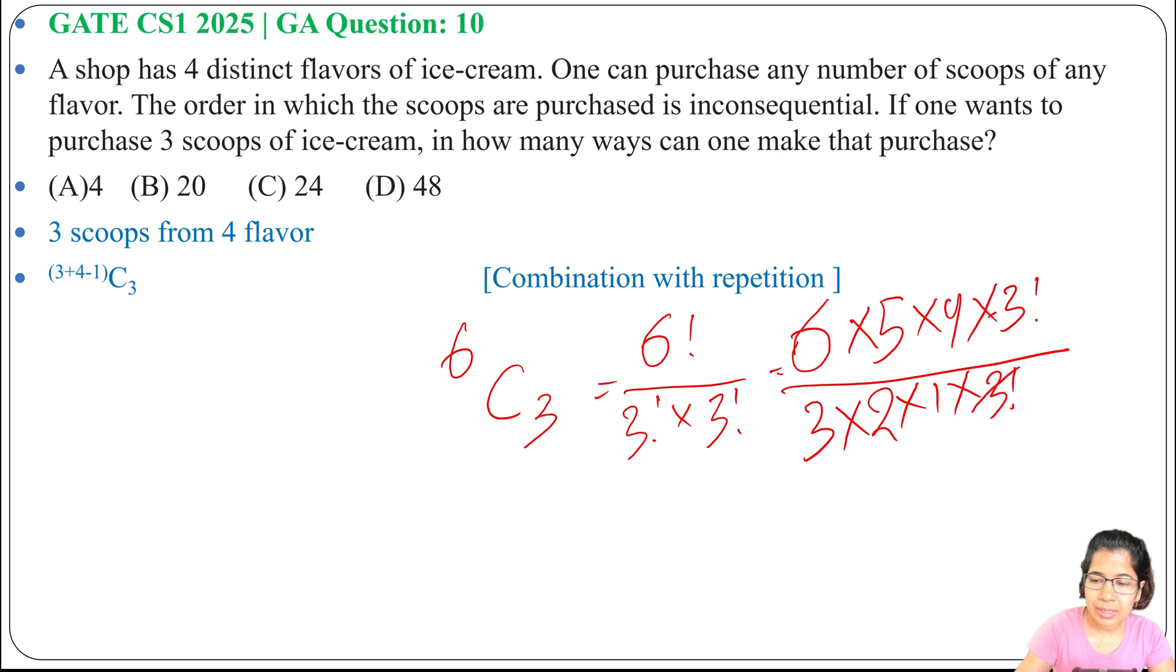So these 3 factorial will be cancelled. 3, 2, 6 cancel. 5 × 4 is 20. Twenty ways can one make the purchase of three scoops with repetition from four distinct flavors. It's present in option B.